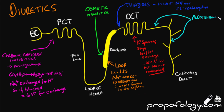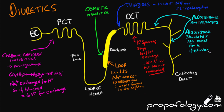Aldosterone antagonists are our last class of diuretics. These act at the distal convoluted tubule and the collecting ducts. They are competitive antagonists of aldosterone, which is important because aldosterone stimulates the reabsorption of sodium in exchange for potassium. So if these receptors are blocked, you get no sodium reabsorption, therefore sodium stays in the tube, therefore you lose water.